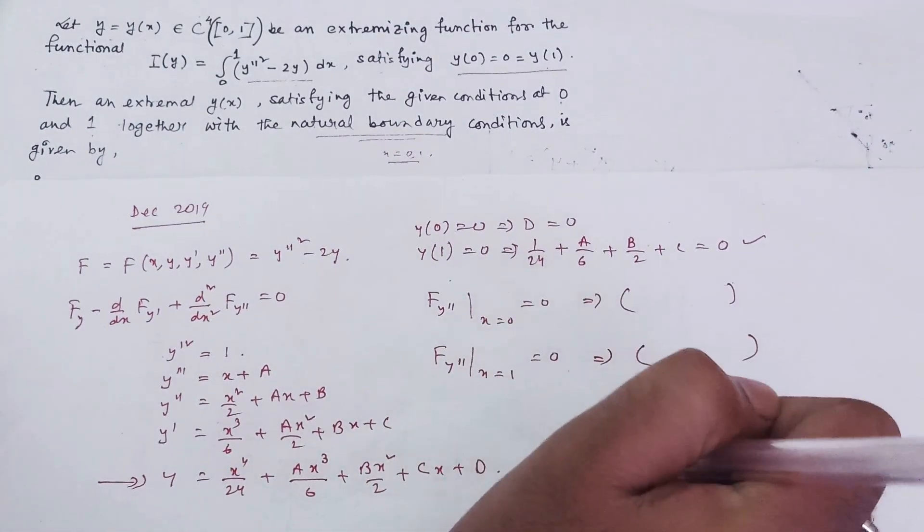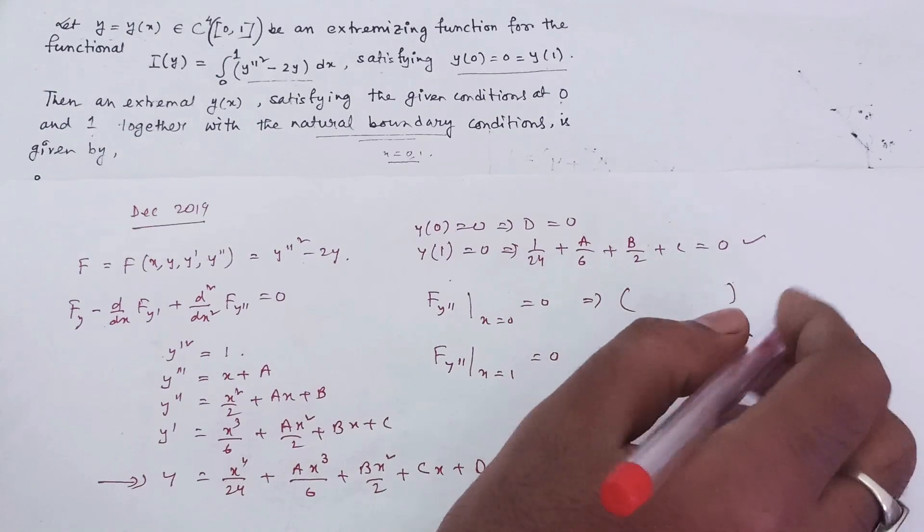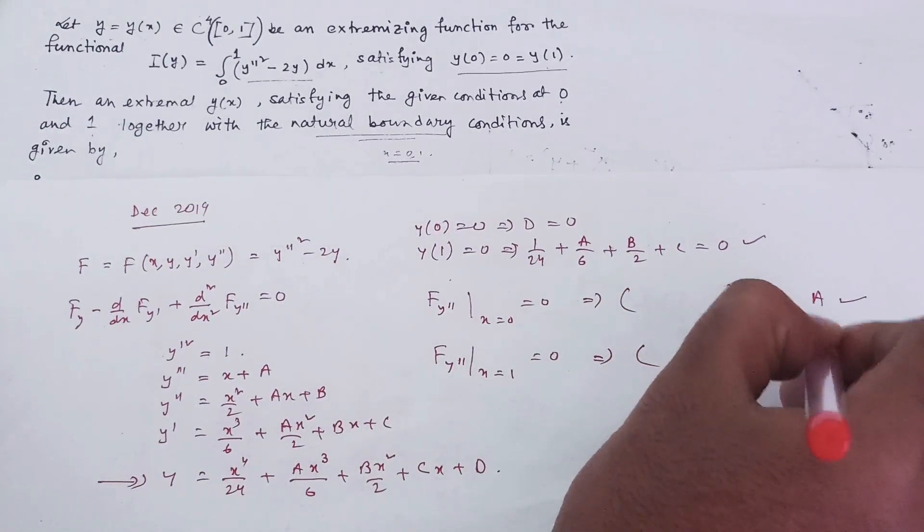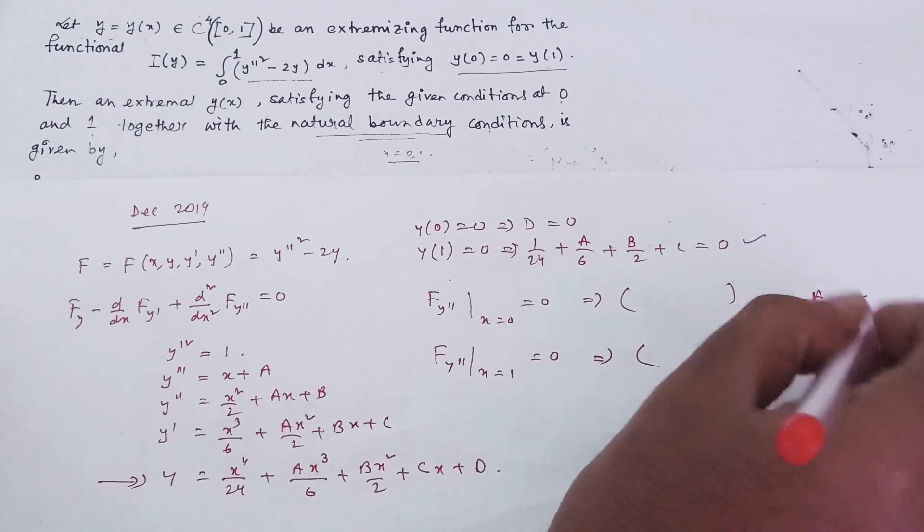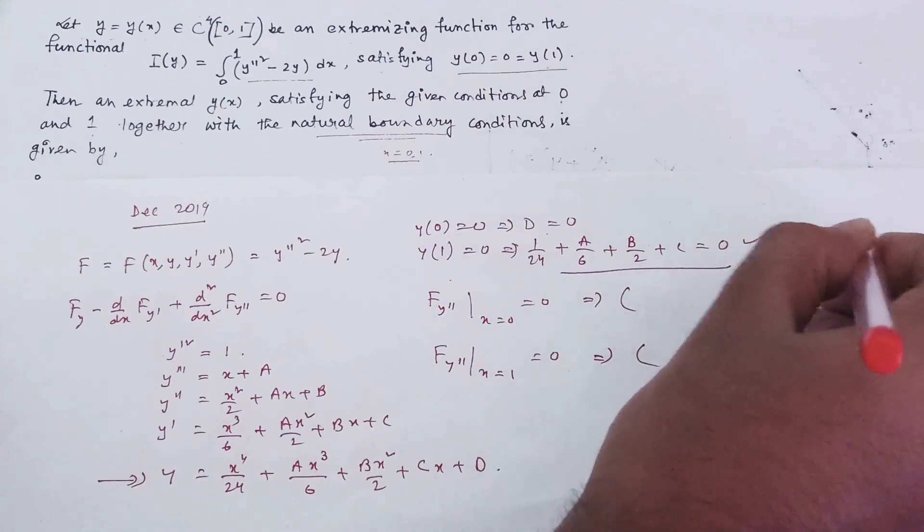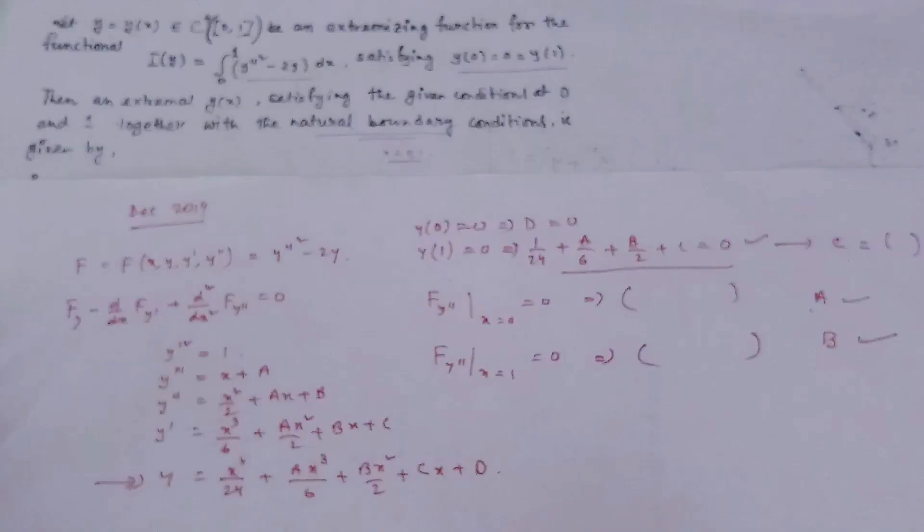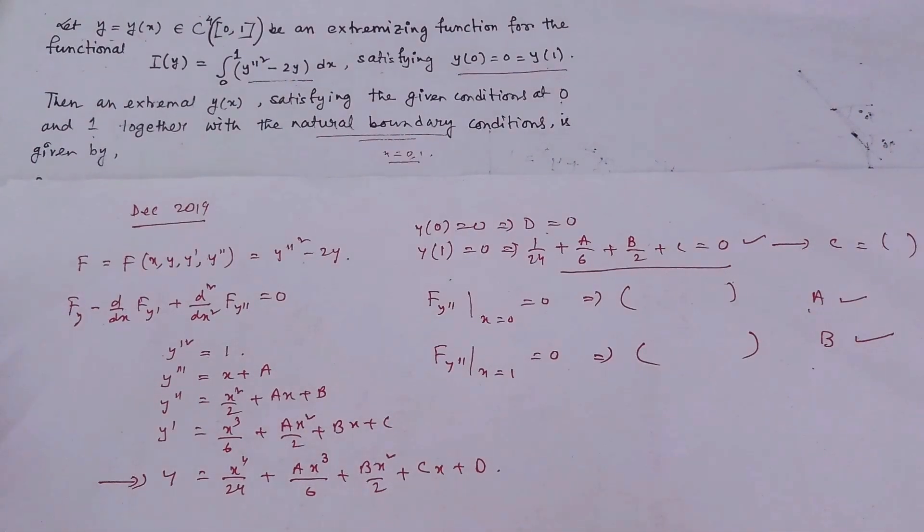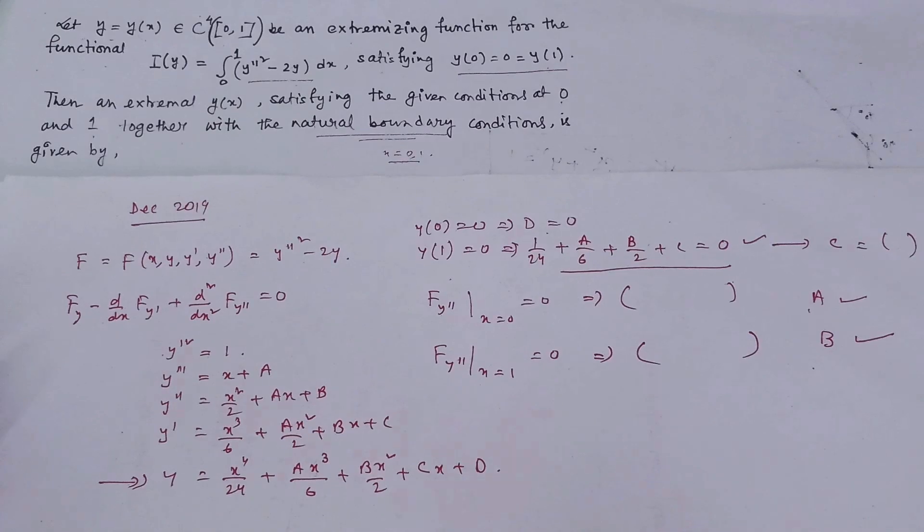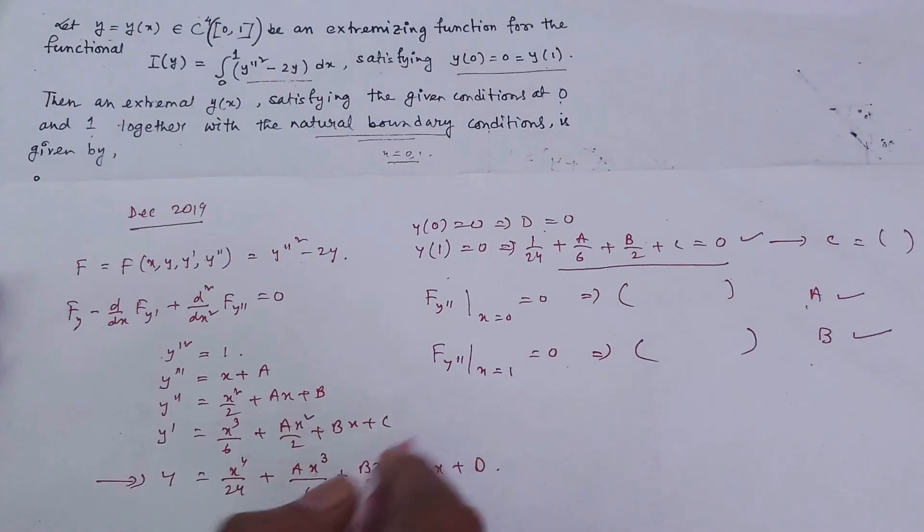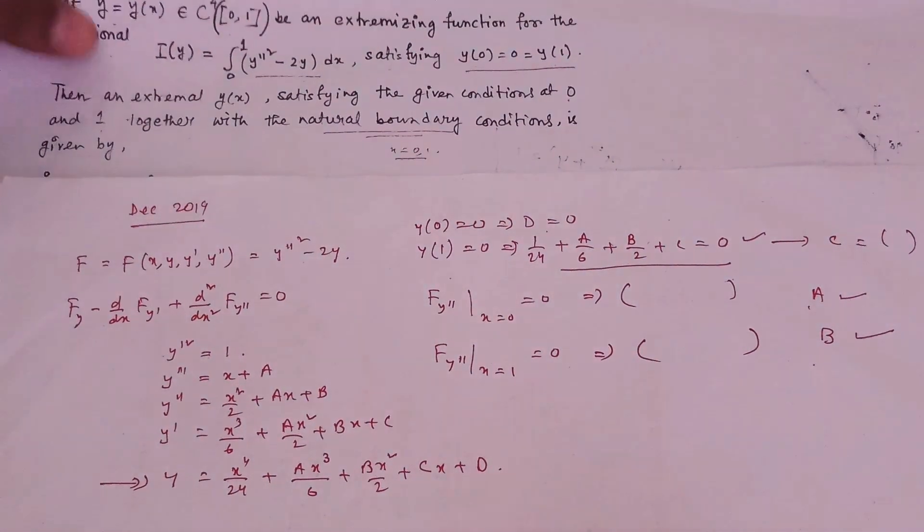From there you will get the values for A and B. Putting all those values of A, B, and D into the equation, you will find the value for C. I'm not doing all these calculations here; you just perform them accurately. Using all these conditions, you will find that